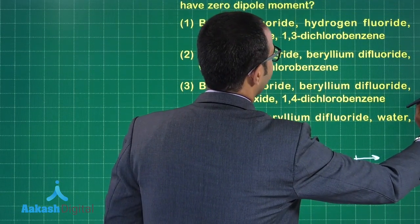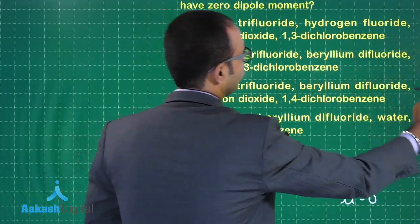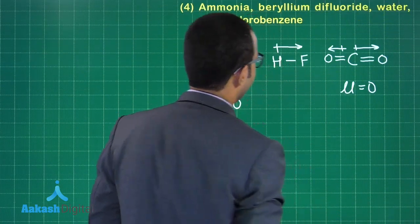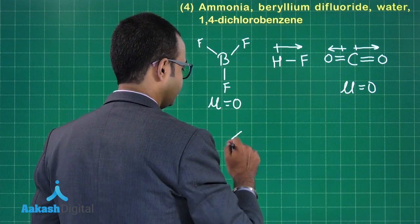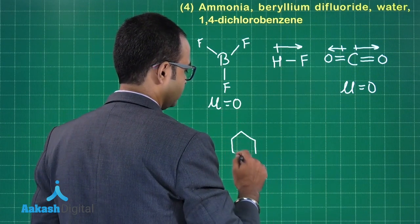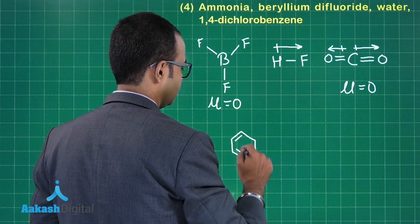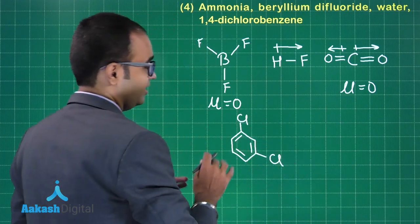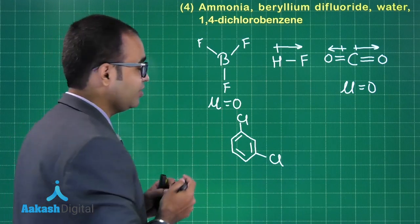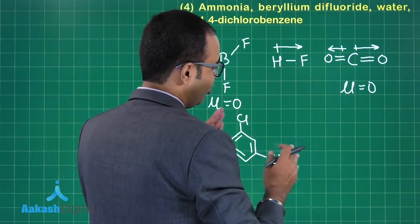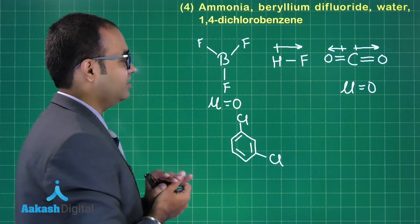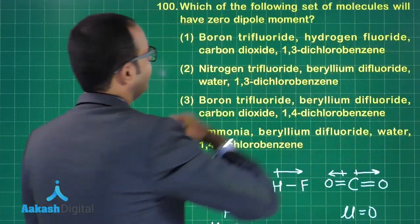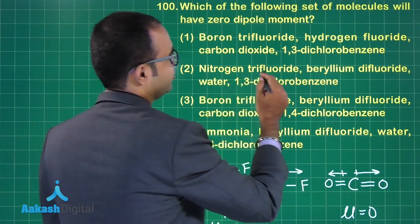Let us look at the fourth molecule, that is 1,3-dichlorobenzene. So is it zero for 1,3-dichlorobenzene? Cl on the first carbon. This will not have a zero dipole moment because the dipole moments are not canceling each other. So first option is not our answer.